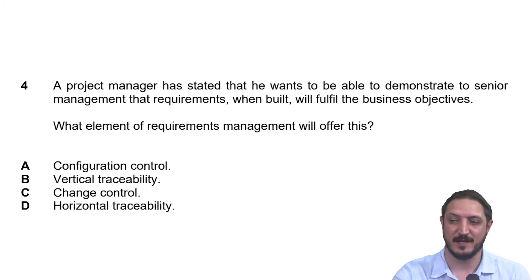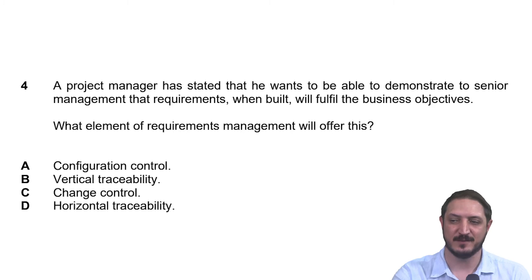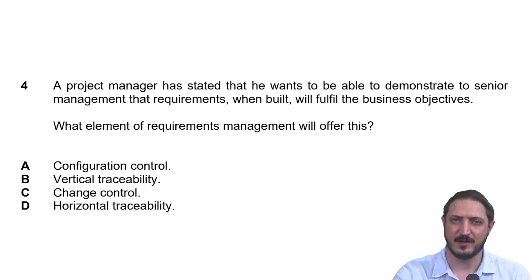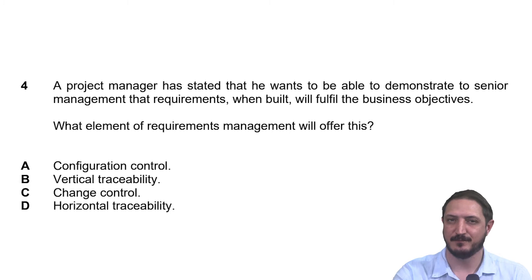They're talking about requirements management and which part of that will offer this. It is in the context of requirements management that they are testing us. So if we look at the options — configuration control, vertical traceability, change control, and horizontal traceability — these are all aspects of requirements management. We should know that we have those six aspects of requirements management.